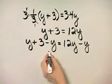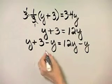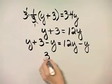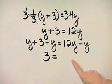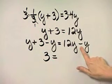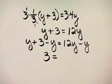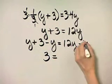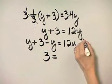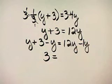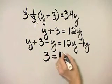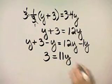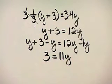Y minus Y is 0, so on the left I have 3. Then, on the right, be careful — this is 12Y minus Y. Remember, that's 12Y minus 1Y, and so that is 11Y.